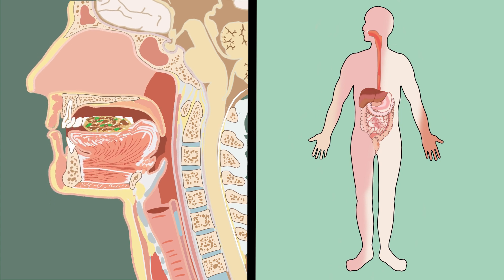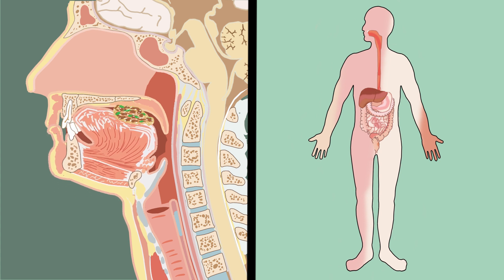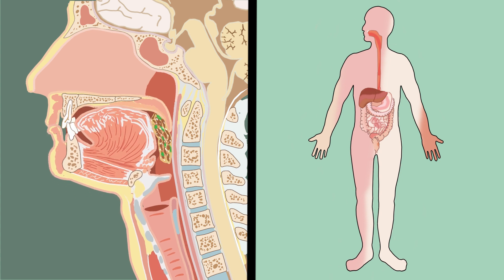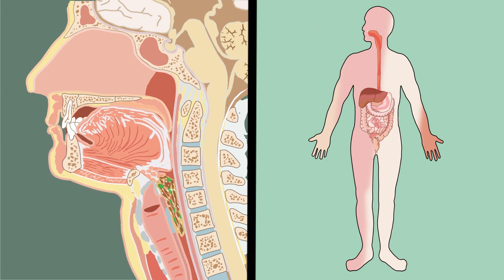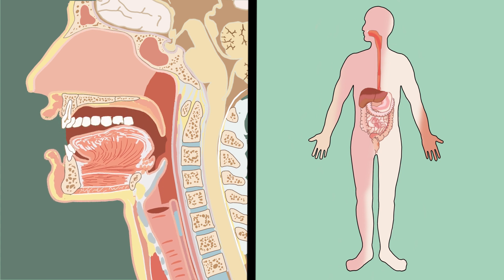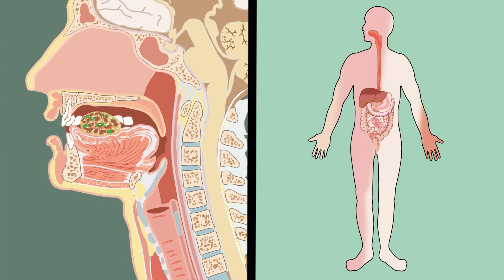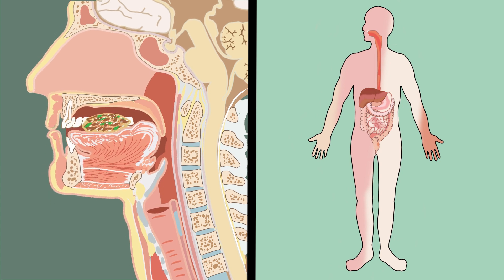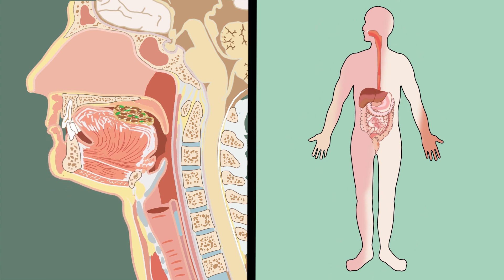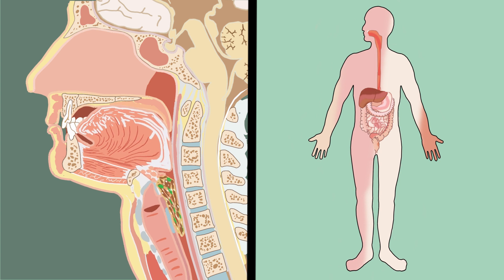Swallowing is basically an involuntary reflex — one cannot swallow unless there is saliva or some substance to be swallowed. Initially, food is voluntarily moved to the rear of the oral cavity, but once food reaches the back of the mouth, the reflex to swallow takes over and cannot be retracted.